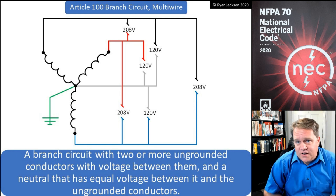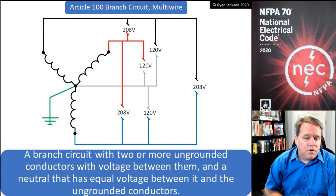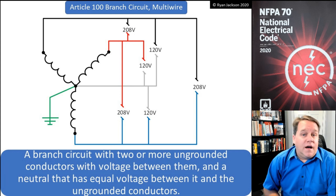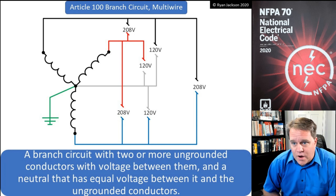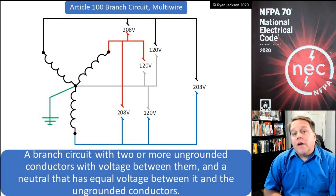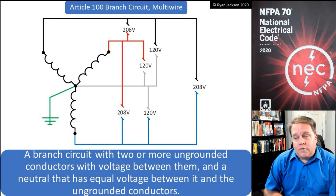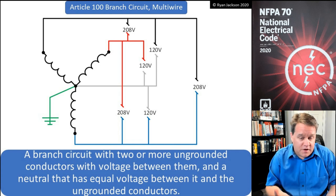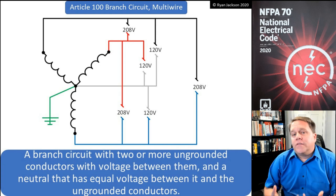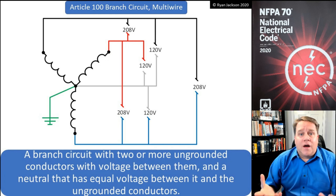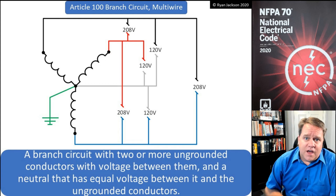We also have multi-wire branch circuits. That's a branch circuit with two or more ungrounded conductors that have voltage between them and a neutral conductor that has equal voltage between it and the ungrounded conductors. If you're sharing a neutral on a branch circuit, that's a multi-wire branch circuit, and they are absolutely still allowed. Some people think you're not allowed to share neutrals — that is not the case at all.